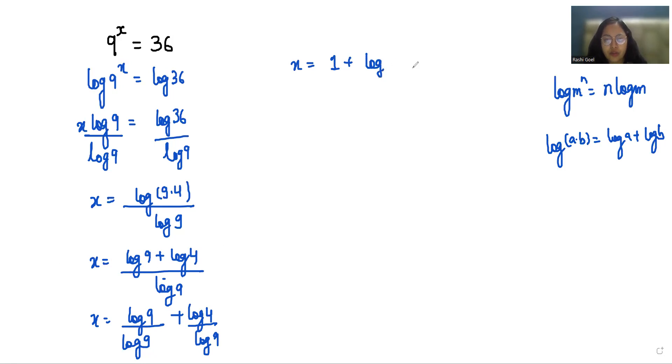This becomes 2 log 2 over 2 log 3. Simplifying, x equals 1 plus log 2 over log 3.